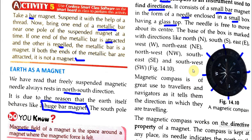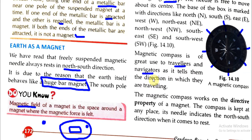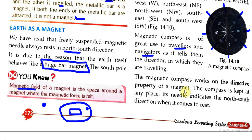The magnetic compass is of great use to travelers and navigators as it tells them the direction in which they are traveling. The compass works on the directive property of the magnet. When the compass is kept at any place, its needle always comes to rest in the north-south direction, so you can find directions using it.